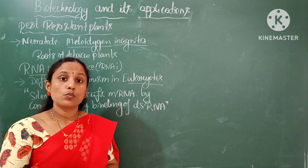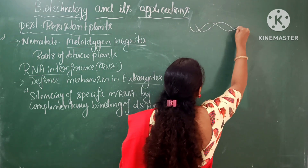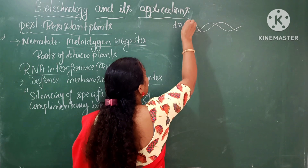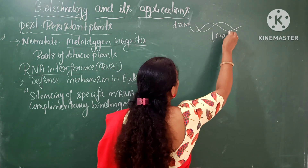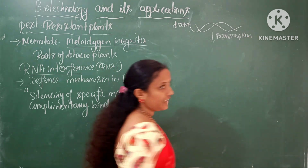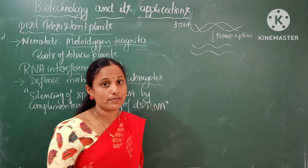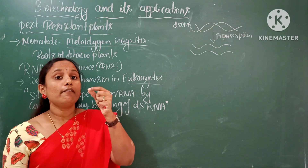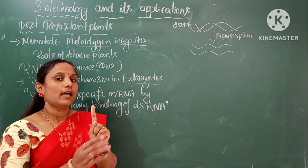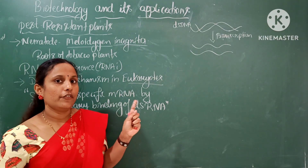During normal gene expression in eukaryotic cells, a double-stranded DNA gene undergoes transcription, where only one strand acts as a template and produces a single mRNA. That mRNA undergoes translation to produce a protein — this is called normal gene expression.